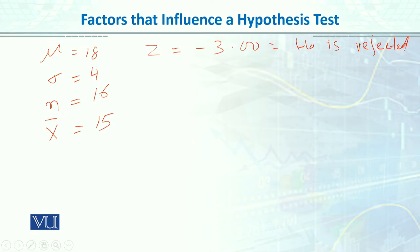But if we first do this, I have said that variability scores affect very much in the testing hypothesis. Let's assume that now sigma is 12 instead of 4, and if I calculate z, then what will I do?